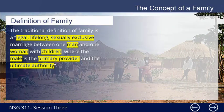Definition of family. The traditional definition of family is a legal, lifelong, sexually exclusive marriage between one man and one woman with children, where the male is the primary provider and the ultimate authority.